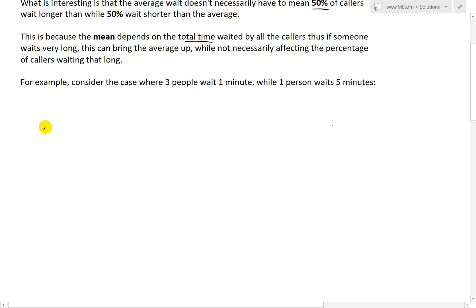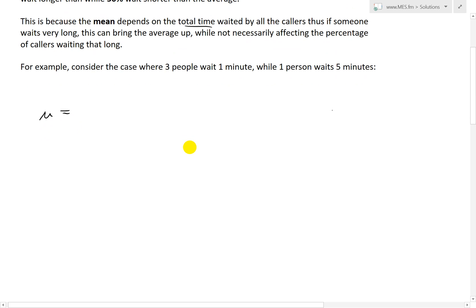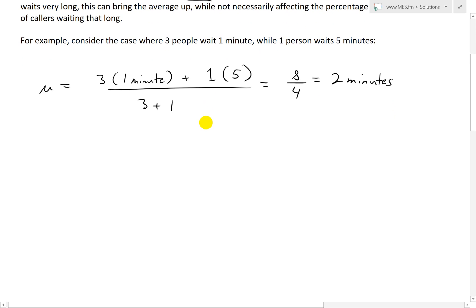So if 3 people wait 1 minute, the average or mean mu is going to be the total time waited, which is 3 times 1 minute plus 1 person times 5 minutes, divided by the total number of people, 3 plus 1. So 3 times 1 is 3, 1 times 5 is 5, so 5 plus 3 is 8 divided by 4, which equals 2 minutes.